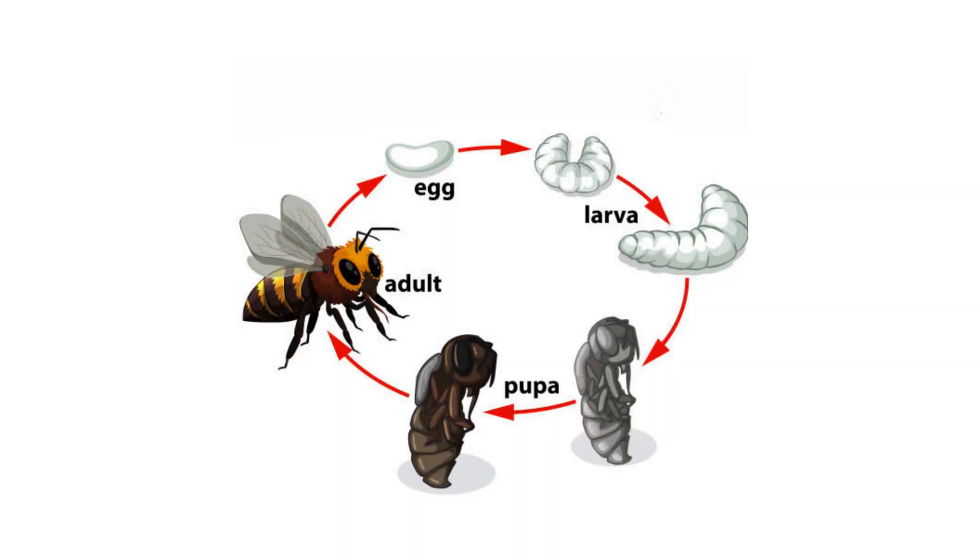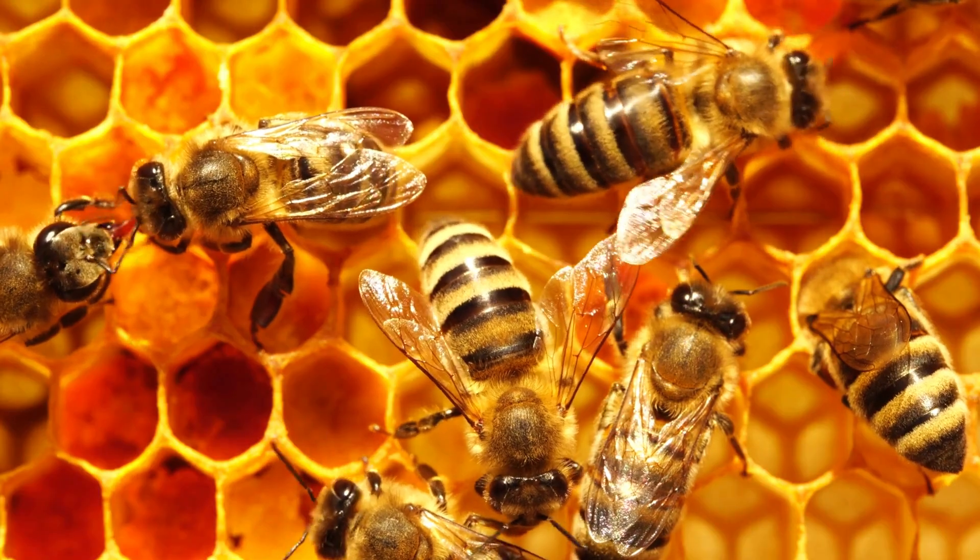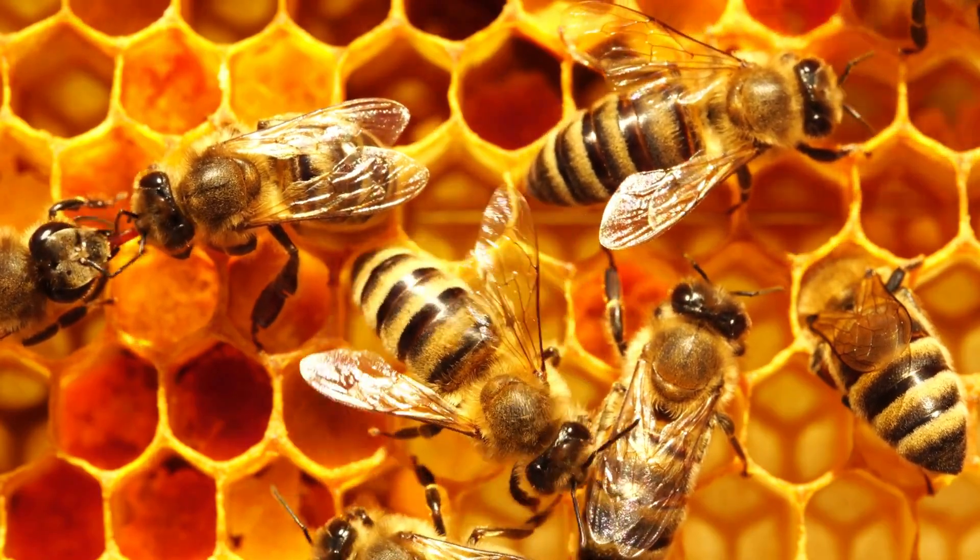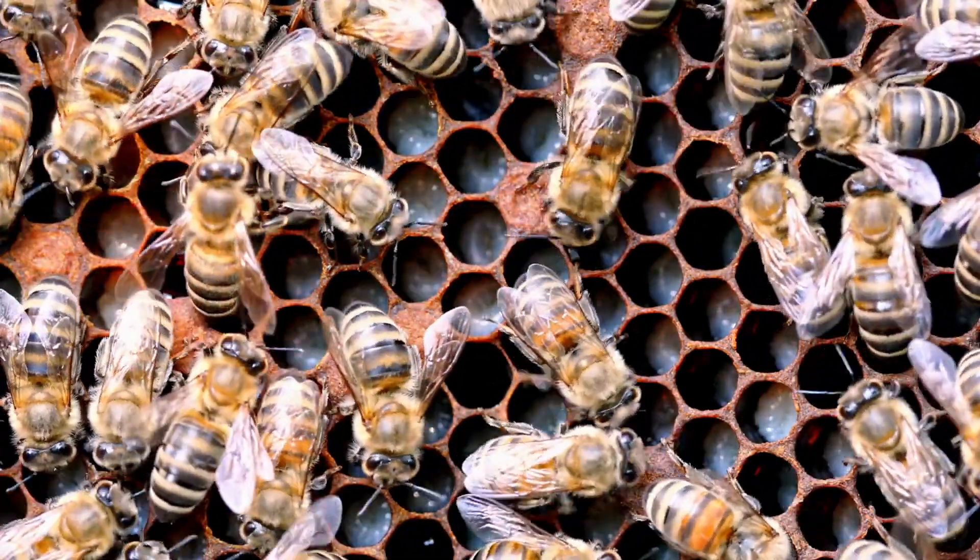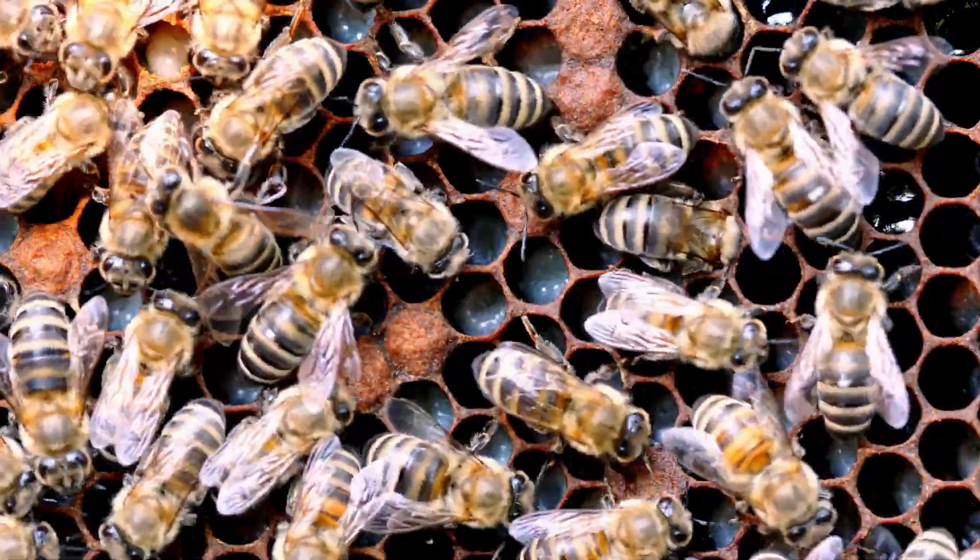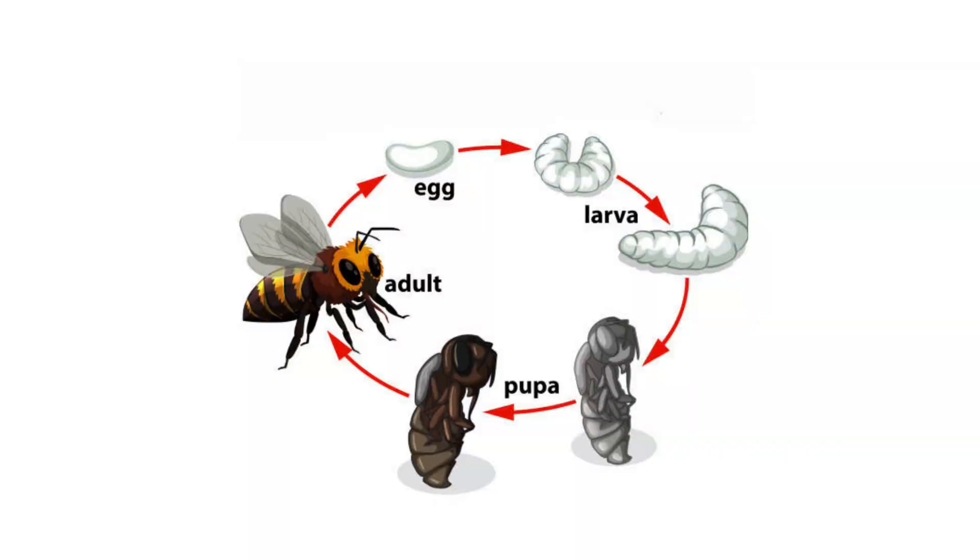Honeybees go through four main stages in their life cycle. Life cycle starts with the egg stage. The queen bee lays these eggs in the honeycomb cells. The eggs are very small and white, almost like a grain of rice. The worker bees take care of the eggs and keep them warm. After a few days, the egg hatches into a larva.